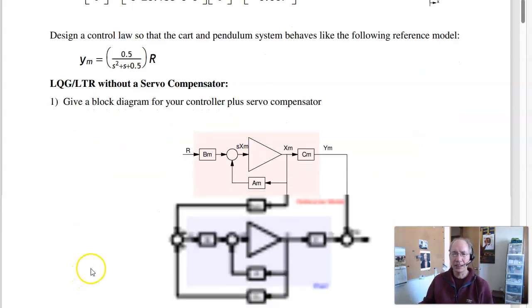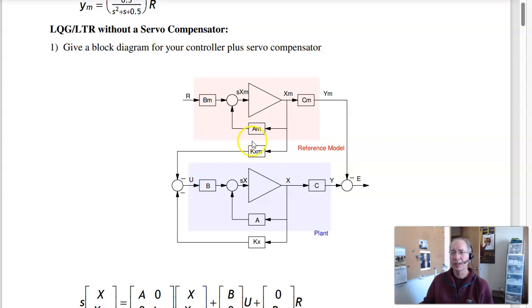The idea is I have a reference model. This defines how the system should behave. Force the plant to behave like the reference model. To do that, I'm going to use LQR control. I'm going to take the augmented system, plant plus reference model, take the difference in the two outputs, E, and weight E.